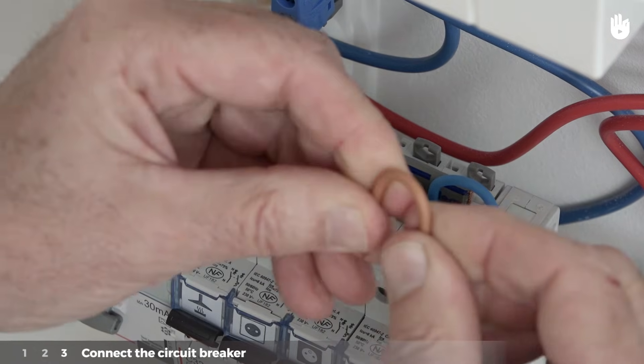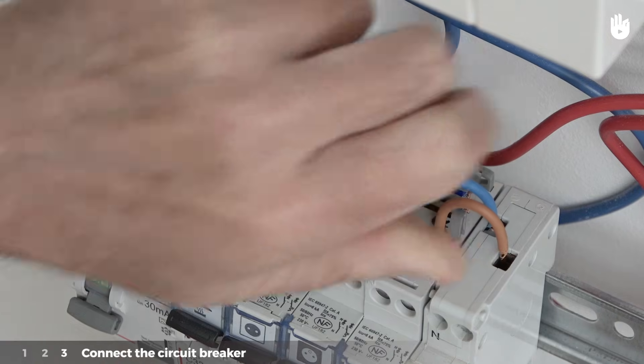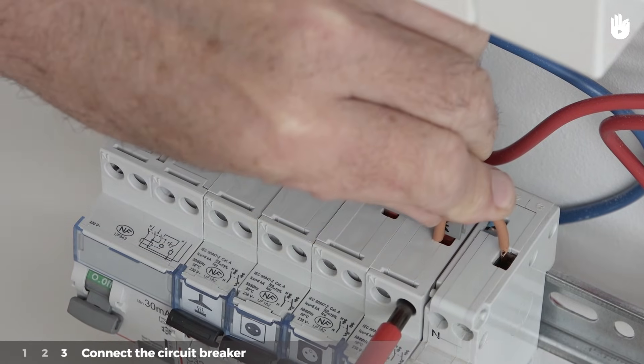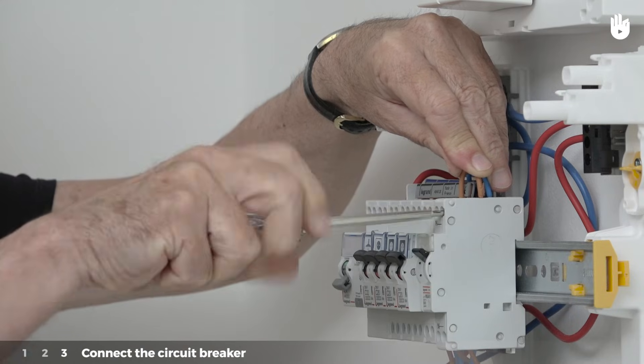Place one end of the other conductor on the phase terminal of the neighboring circuit breaker and the other end on the phase terminal of the new circuit breaker. Screw back in the phase terminals of both circuit breakers.